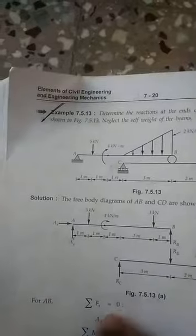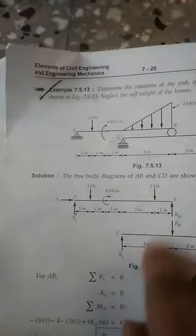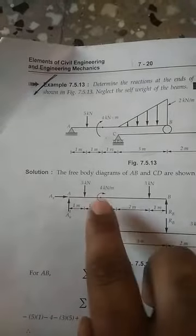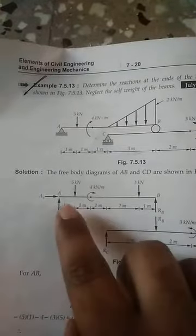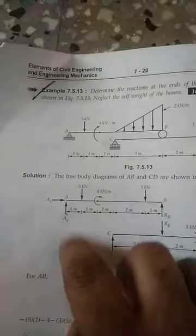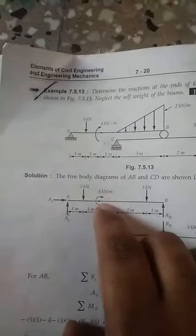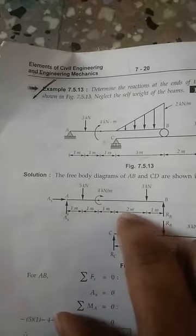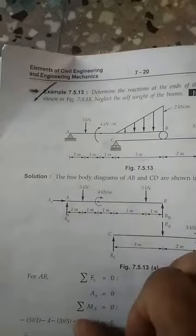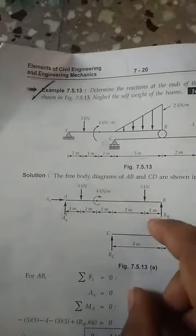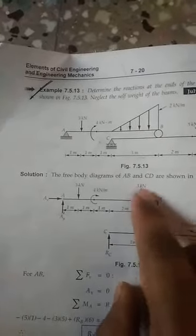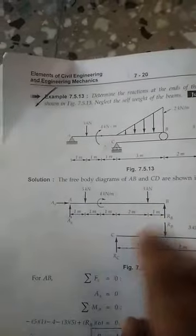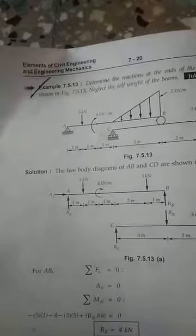Take moment at A equal to zero, with anticlockwise direction as positive. The 5 kN load at distance — clockwise, so it is negative. Next, 4 kilo-newton is clockwise, so minus 4. Then 3 kN into distance of 3 plus 2 = 5, so 5 into 3 — clockwise, so minus. Next, Rb into 6 meters is anticlockwise, so it is positive.